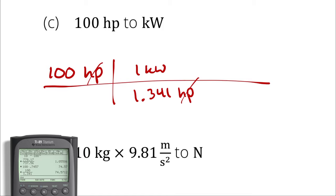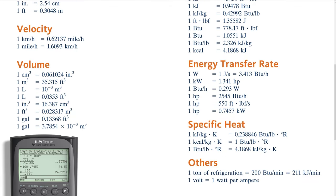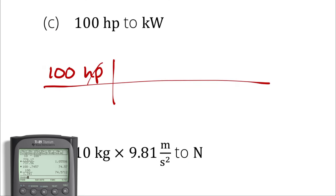If you hook your engine up to a dyno and it says you're producing 100 horsepower on the nose, there's a lot of play in your ability to record that. Since we did it two ways already, let's try more ways. Let's take horsepower into feet pound force per second, then make the unit conversion switch from feet and pound force into metric, and then convert those back into kilowatts. So I will say one horsepower is equal to 550 feet times pounds of force per second.